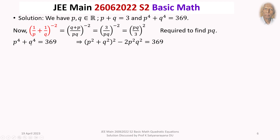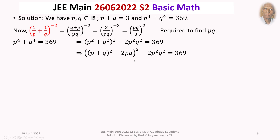We have P⁴ plus Q⁴ equal to (P² plus Q²)² minus 2P²Q², which equals 369. And P² plus Q² can be written as (P plus Q)² minus 2PQ. So substituting, we get [(P+Q)² minus 2PQ]² minus 2P²Q² equals 369. With P plus Q equal to 3, this becomes (9 minus 2PQ)² minus 2P²Q² equals 369.